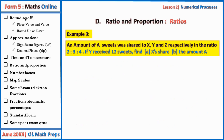Example three: an amount A was shared to X, Y, and Z respectively in the ratio 2:3:4. If Y received 12 sweets, find X's share and the amount A. Many students make mistakes on questions where the total amount is not given. Here the total amount has not been given, but we are told Y's share. From the ratio, Y corresponds to three parts. So three parts corresponds to 12 sweets.